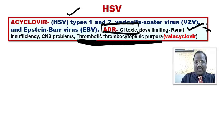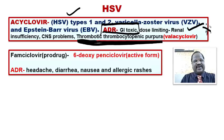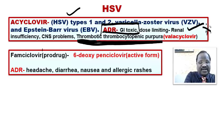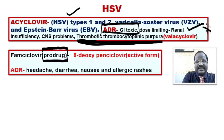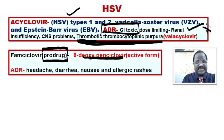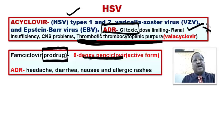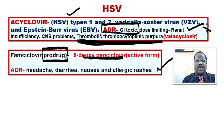Another drug useful for herpes simplex virus is famciclovir. An important MCQ point: famciclovir is a prodrug, and the active form of famciclovir is 6-deoxy penciclovir. This drug may cause side effects of headache, diarrhea, nausea, and allergic skin rashes are also common with famciclovir.